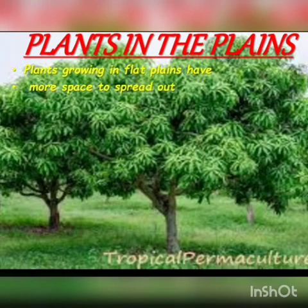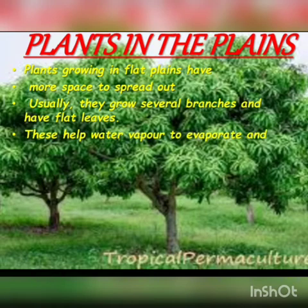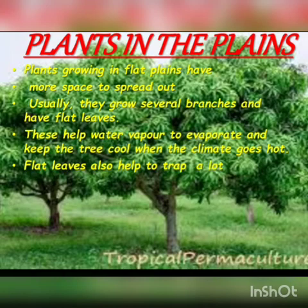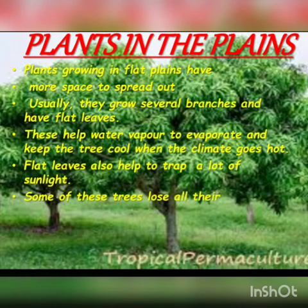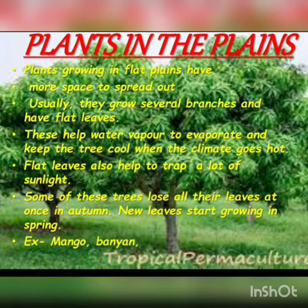Plants in the plains. Plants growing in flat plains have more space to spread out. Usually they grow several branches and have flat leaves. These help water vapor to evaporate and keep the tree cool when the climate goes hot. Flat leaves also help to trap a lot of sunlight.